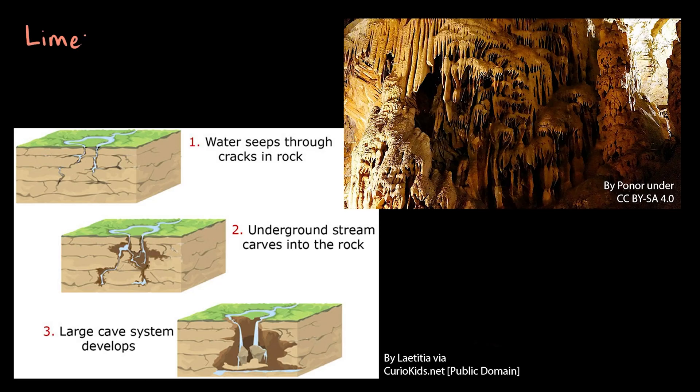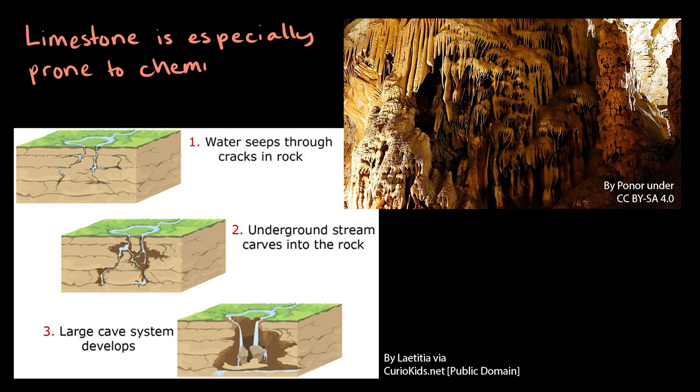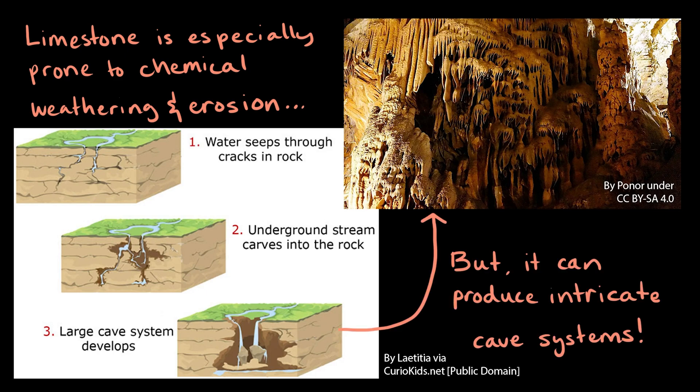Certain rocks, like limestone, are especially vulnerable to erosion. In particular, limestone easily erodes due to carbonic acid in rainwater, which forms when carbon dioxide, or CO2, from the atmosphere dissolves in water. In turn, limestone erosion can produce intricate cave systems.